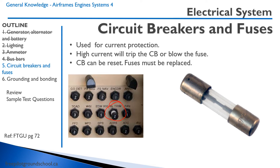Generally speaking, if a circuit breaker trips, there's a good reason for it — there might be an electrical problem. If you don't require that piece of equipment, just leave it off and have maintenance look at it. If you do require it, you can reset it just once. Recently I was flying at night on short final and turned the landing light on. We suddenly got a burning electrical smell, and then noticed the circuit breaker for the landing light had tripped, indicating a short. It turned out wires had chafed and shorted out. We left it off because resetting it risked an electrical fire.